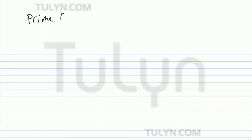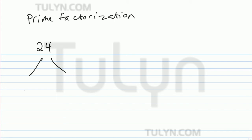Now we're supposed to find the prime factorization of the number 24. So go ahead and break it down into two factors — there's 12 and 2. 2 is already prime, so let's go ahead and break down 12, that branch.